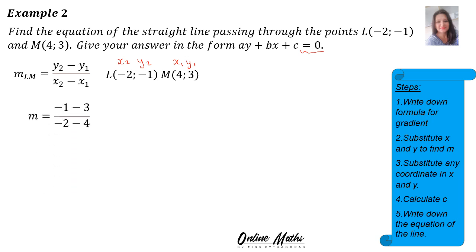So now into y2's place, negative 1 minus 3. Remember, in fact it's a bracket minus and then 3 over negative 2 minus bracket 4. And then you solve. Minus 1 minus 3 is negative 4 over minus 2 minus 4 is negative 6. And then your gradient is 2 over 3.